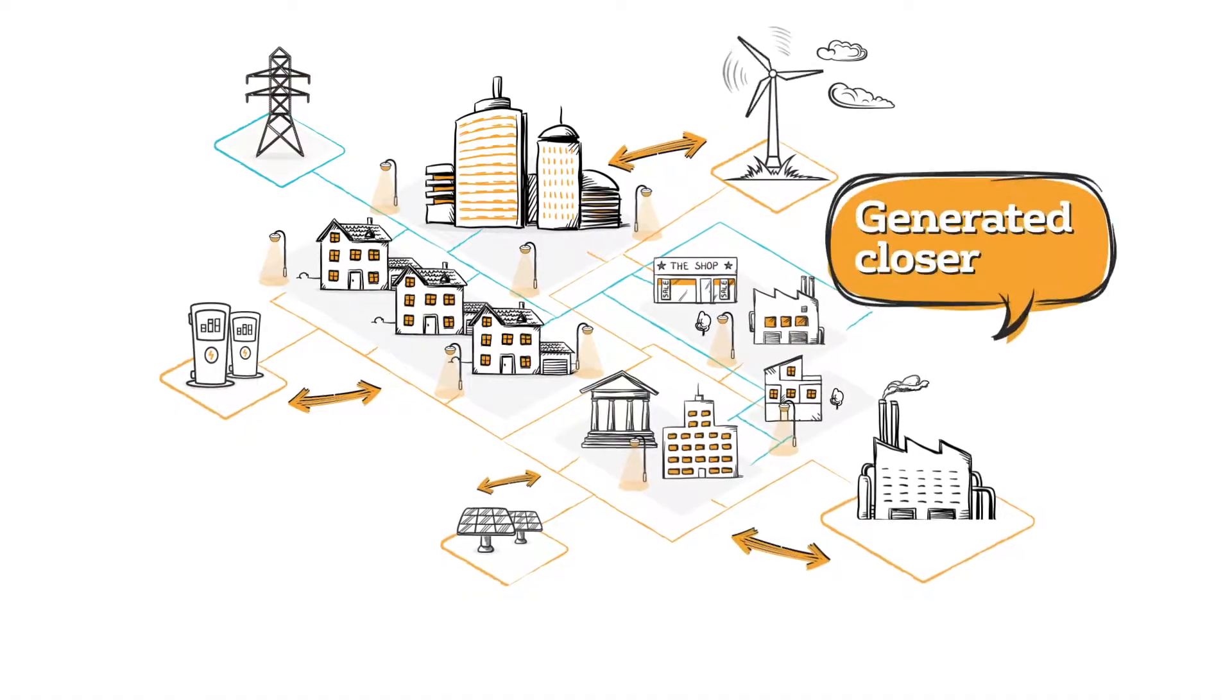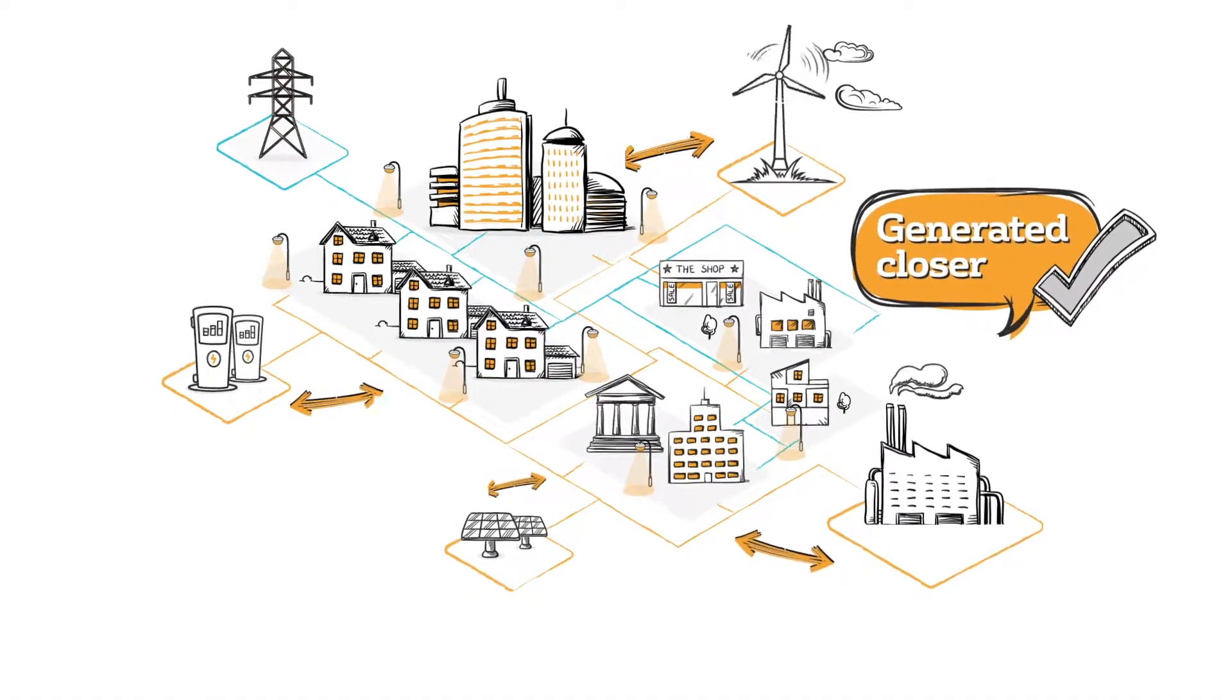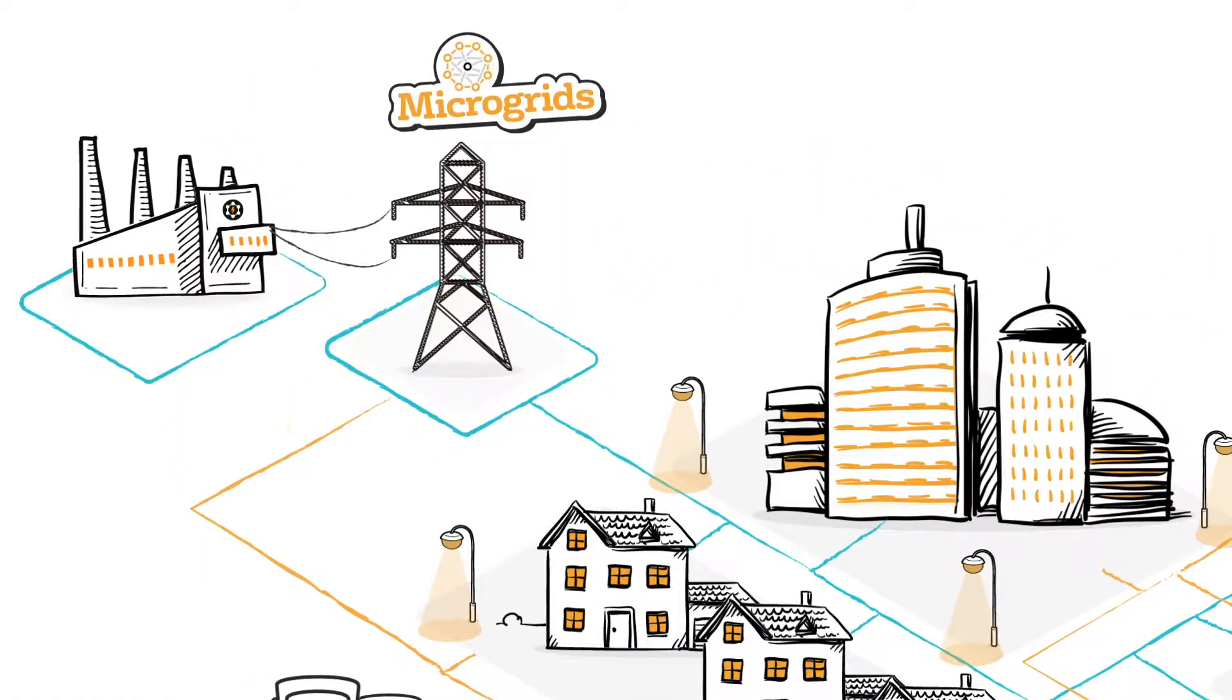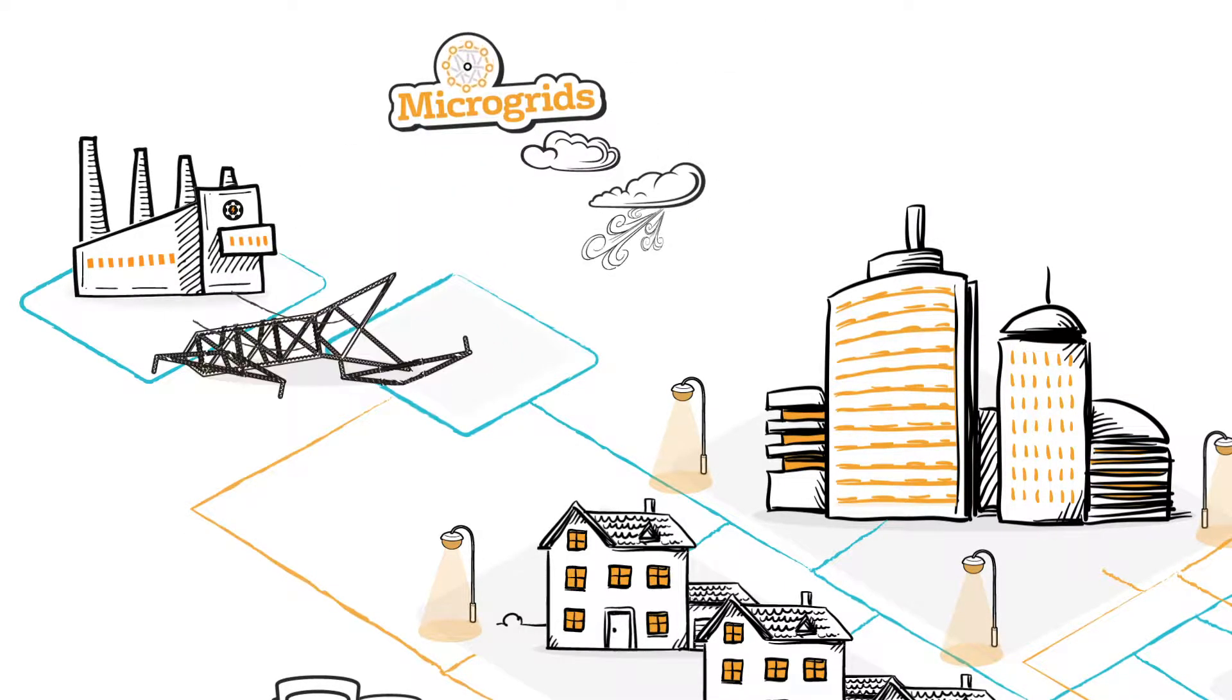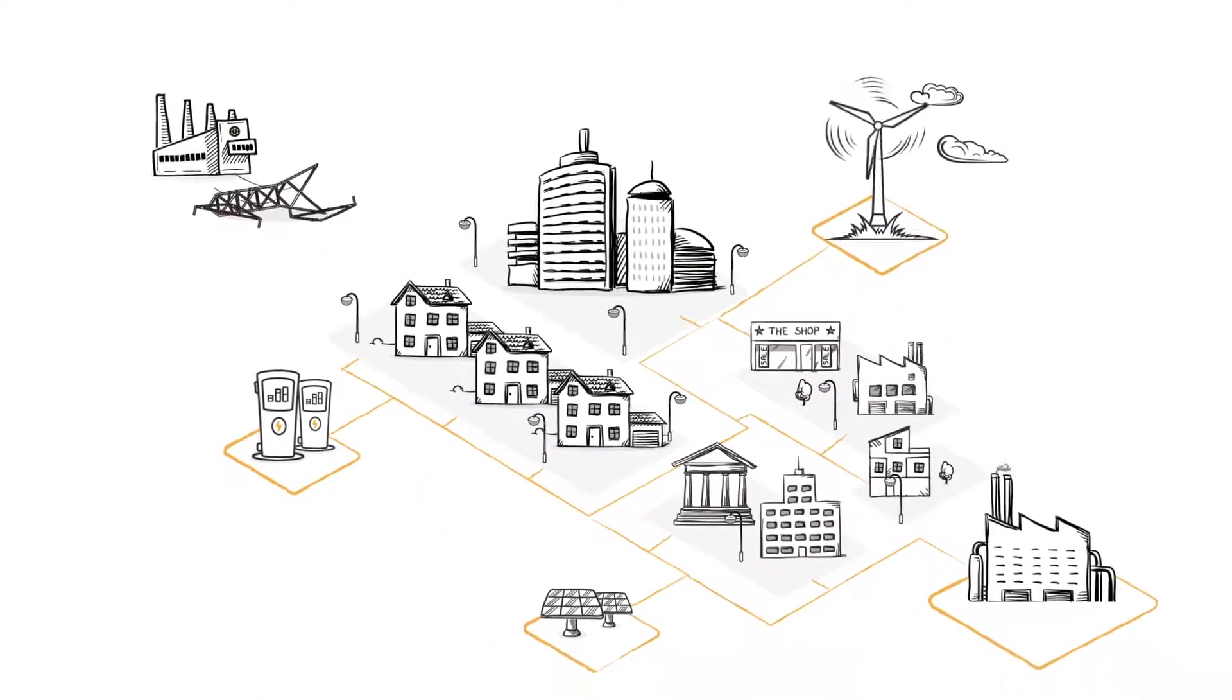This means that energy is generated closer to where it's needed. The microgrid, which can be connected to the larger central grid, can function as a supplement or operate independently, providing a secure backup when there's an outage.